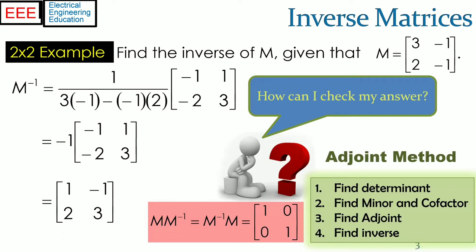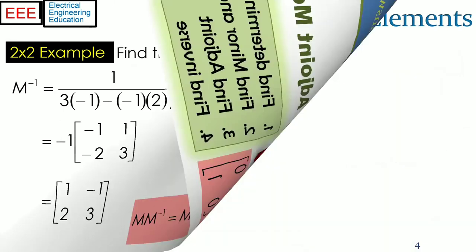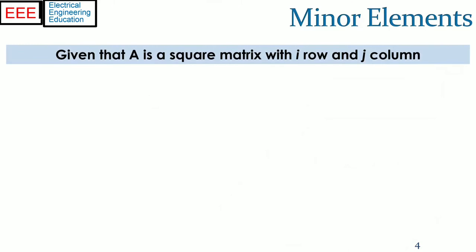We will be only considering the adjoint method to find the inverse of higher order matrices. The steps are: 1, find determinant; 2, find the minor and cofactor matrices; 3, find the adjoint; and 4, find the inverse. The second method based on elementary row operations, or the Gauss-Jordan elimination method will be discussed in the course linear algebra.